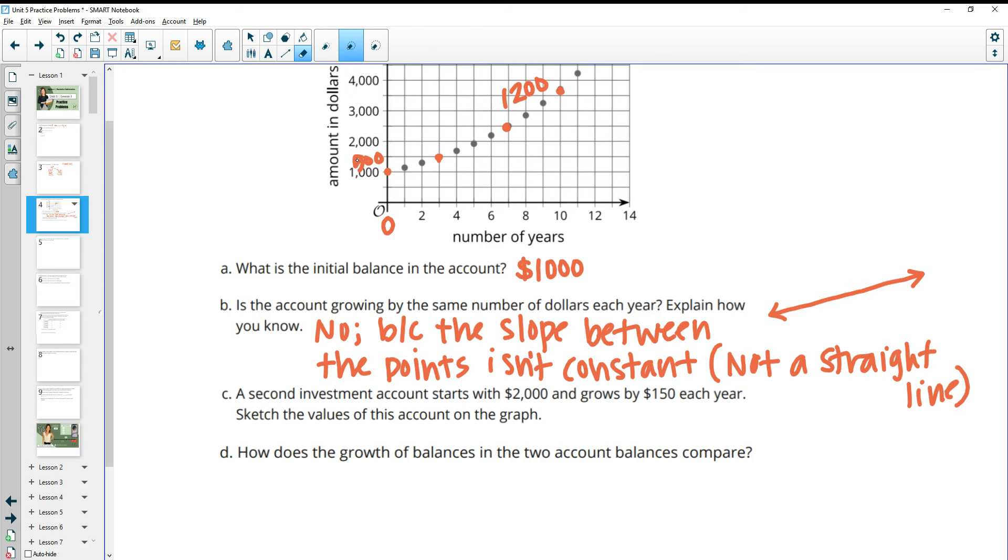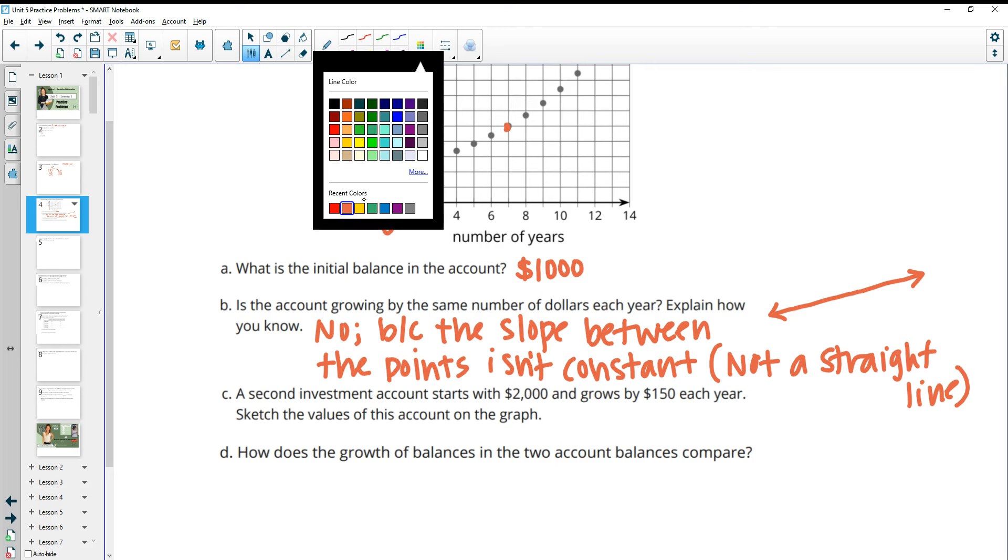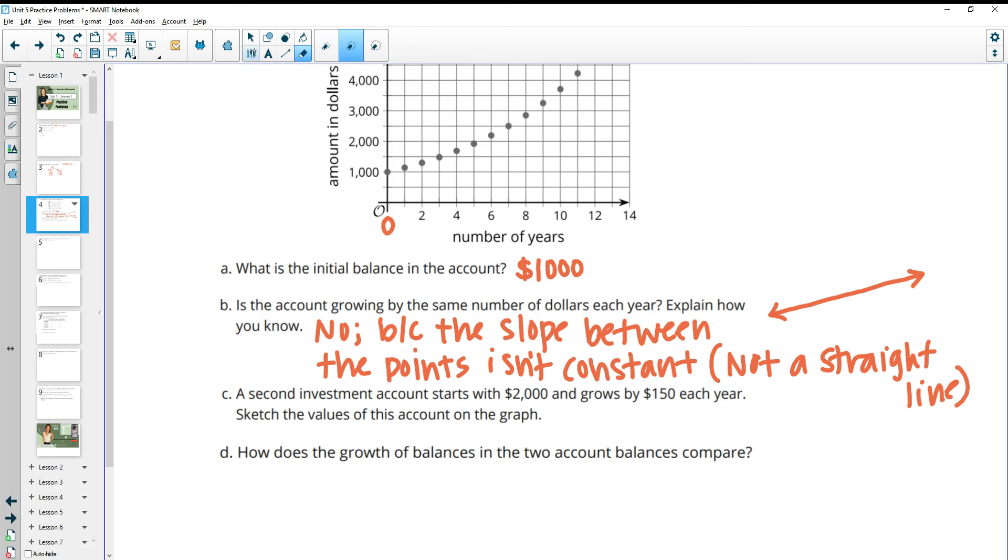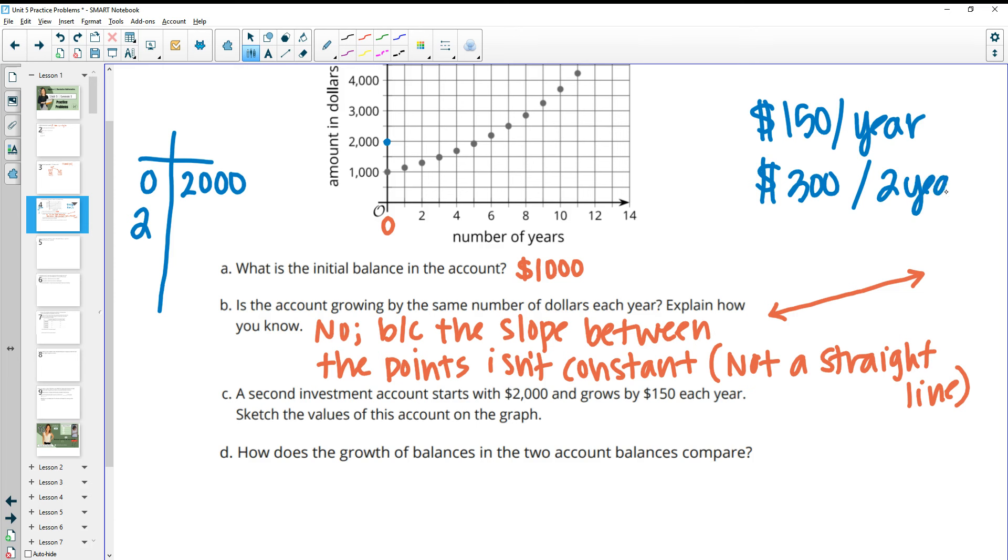C says a second investment account starts with $2,000 and grows $150 per year. Then it says sketch the values on the graph. So let's sketch those values. I'm just going to create a little table over here. So it's starting at 2,000, and then it's growing by 150 each year. And I'm just going to plot the even numbers. So 150 per year would mean that it's going to be 300 per two years, right?